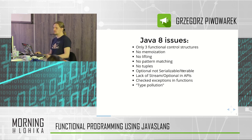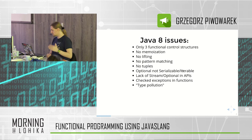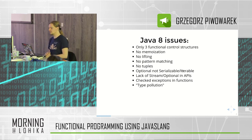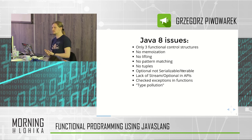Another thing is type pollution. We had a huge number of different functional interfaces with different names — there is Function, BiFunction, Predicate, BiPredicate, Consumer, BiConsumer, UnaryOperator, BinaryOperator, and so on. There are quite a lot of them, and it gets really confusing. Which one to use? Because suddenly in the API you see BiConsumer and you need to think about what it actually is. It could have been much simplified by using just one function name or a slightly different naming convention.